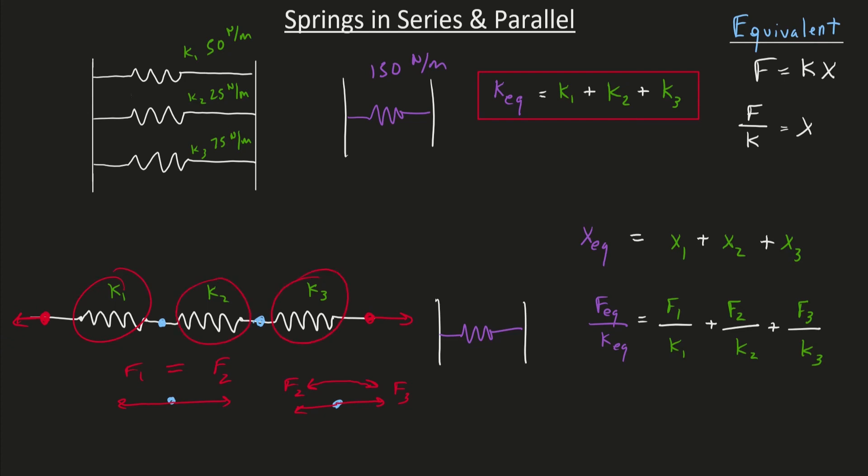And therefore, for our equivalent spring to act the exact same way, its force must be equal to the force produced in each one of these springs. So all in all, the force of our equivalent spring must be equal to the force that each one of our springs produced. They must all be the same number. And therefore, I can cancel them out of the equation. And if we do that, we'll end up with this equation right here.